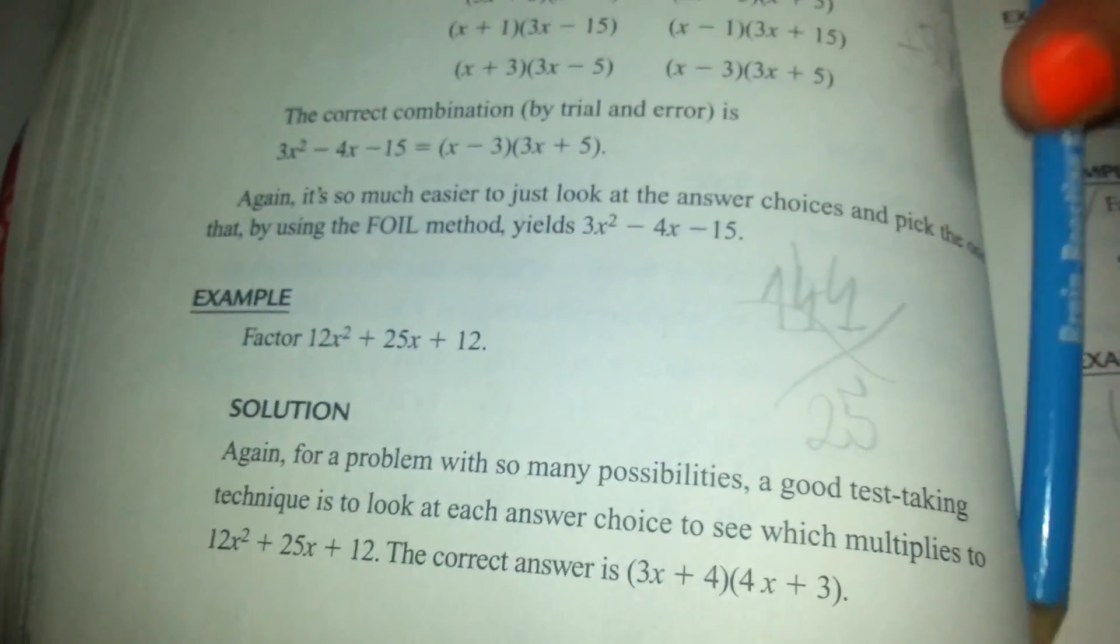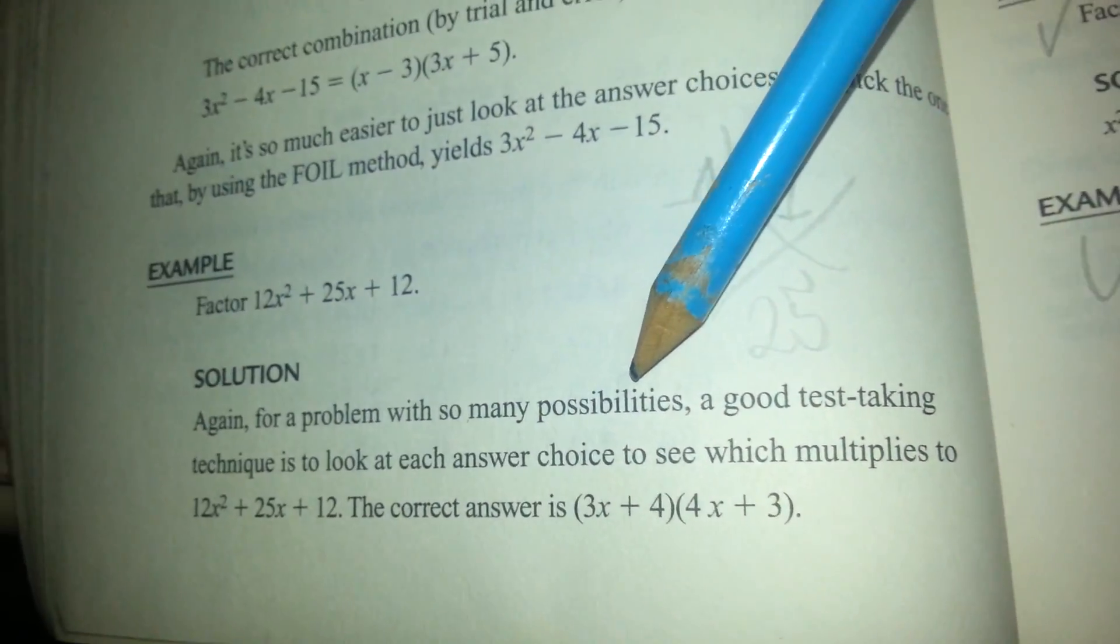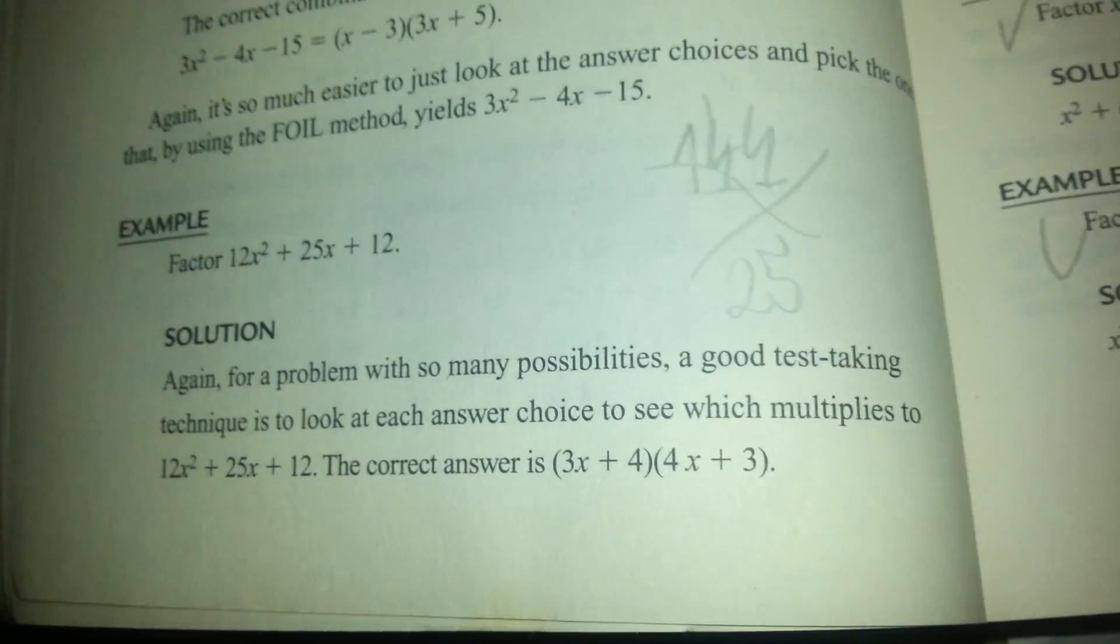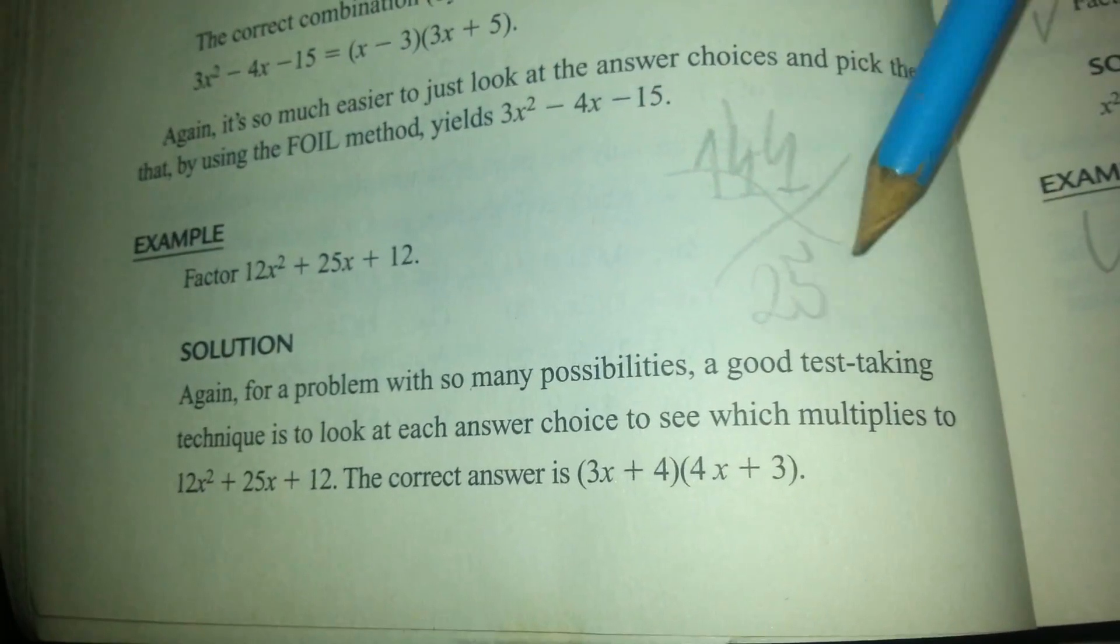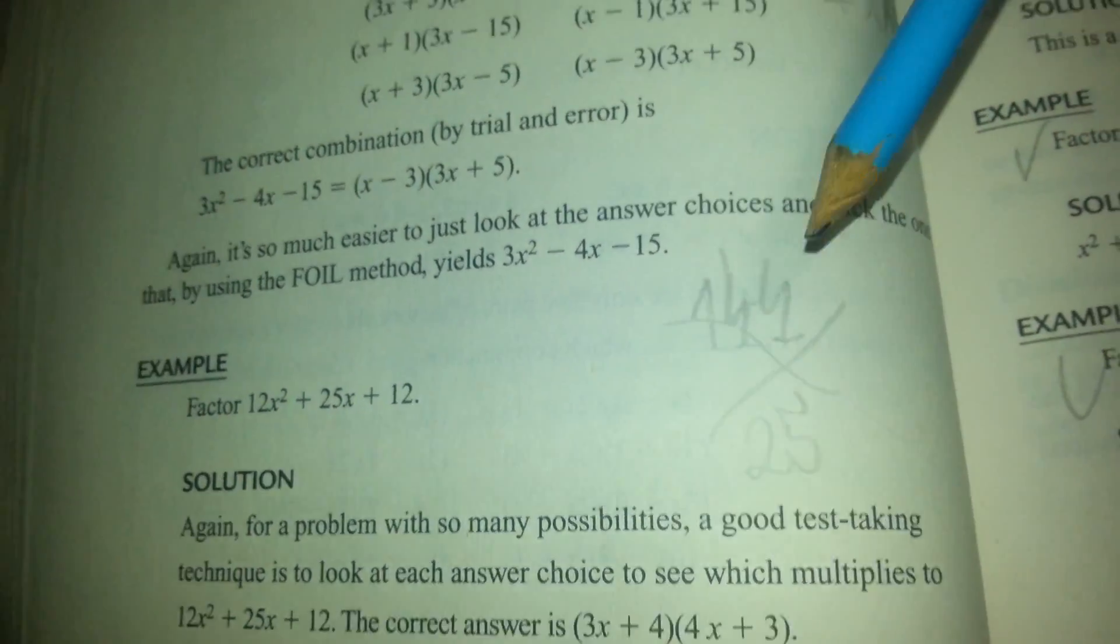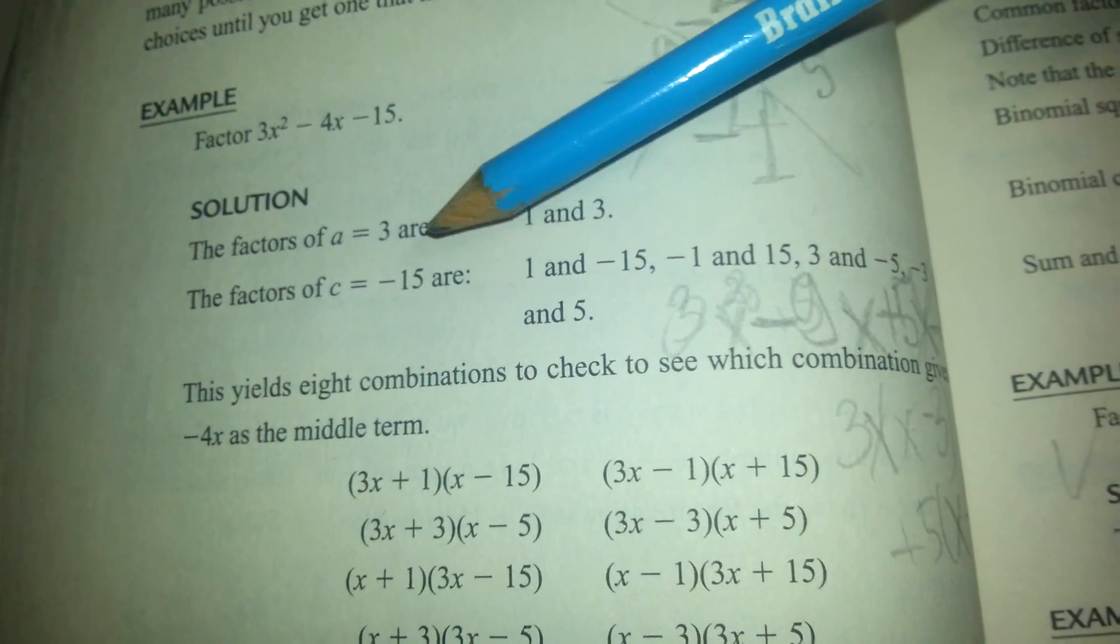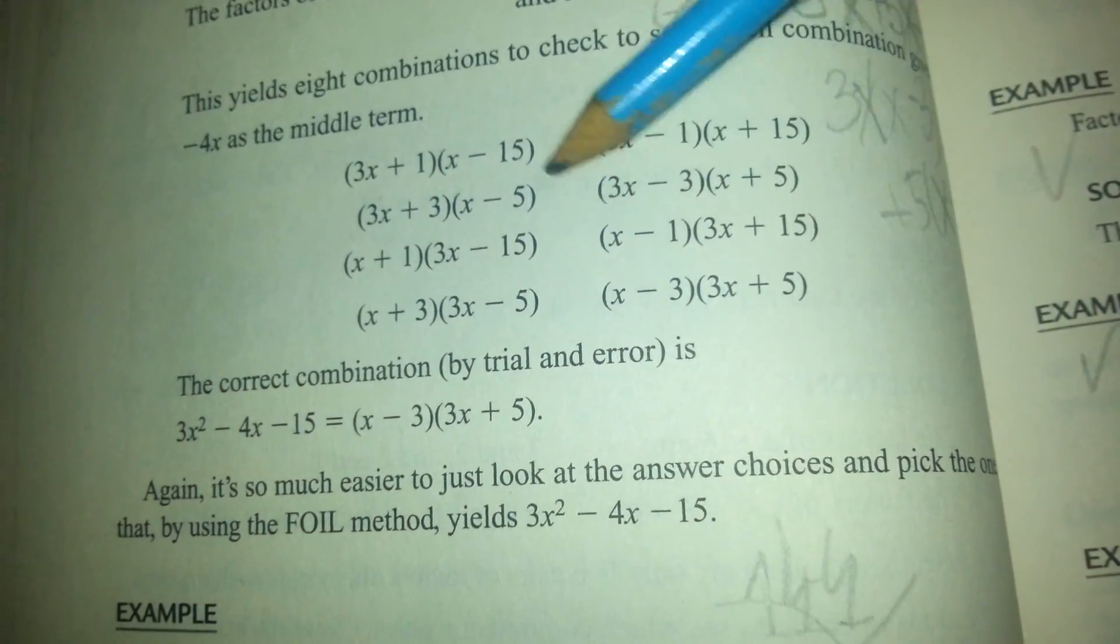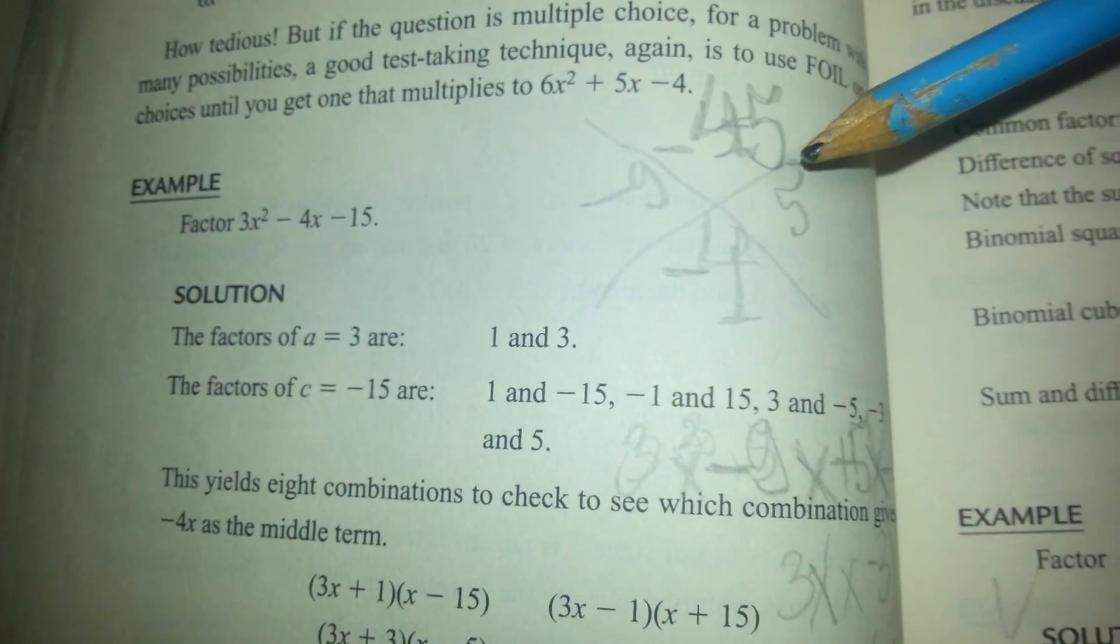Okay, now these are extra problems for you. They make it such a big deal out of it, like, Oh my God, this problem has so many possibilities. This aching technique is to look at each answer choice. Oh yeah! Like I have a thousand years to solve this damn problem. So what you do, you just multiply this, 25. The sum of these two numbers has to be 25, and the multiplication has to be 144. And then this one also, they tell you find the factors, find the possible blah, blah, blah, and do all this, and finally found this. Trial and error. I hate this.